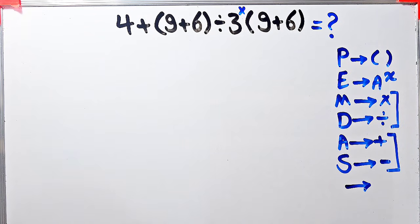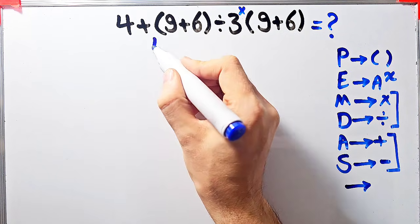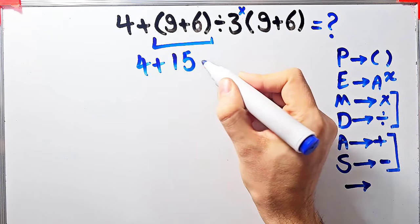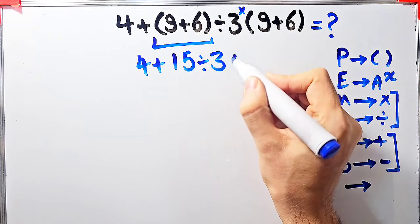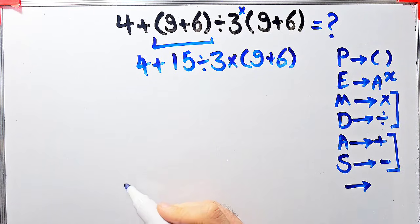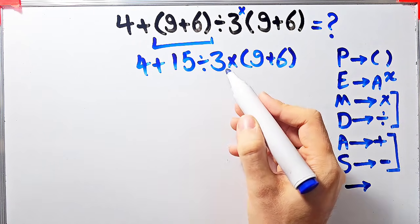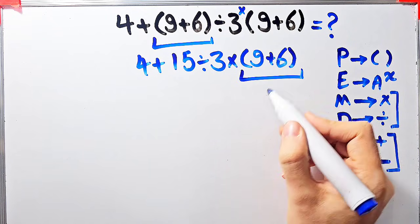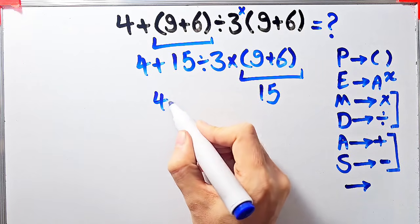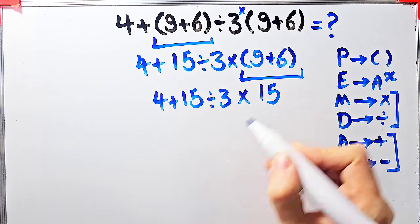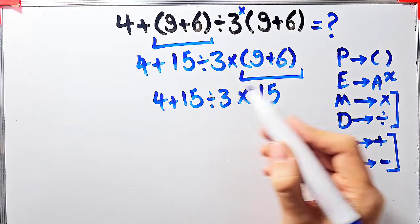According to the PEMDAS rule, in this question we first simplify the parentheses: nine plus six equals fifteen. Now the question is four plus fifteen divided by three, times open parentheses nine plus six close parentheses. We simplify the second parentheses: nine plus six equals fifteen. Now we have four plus fifteen divided by three, then times fifteen.